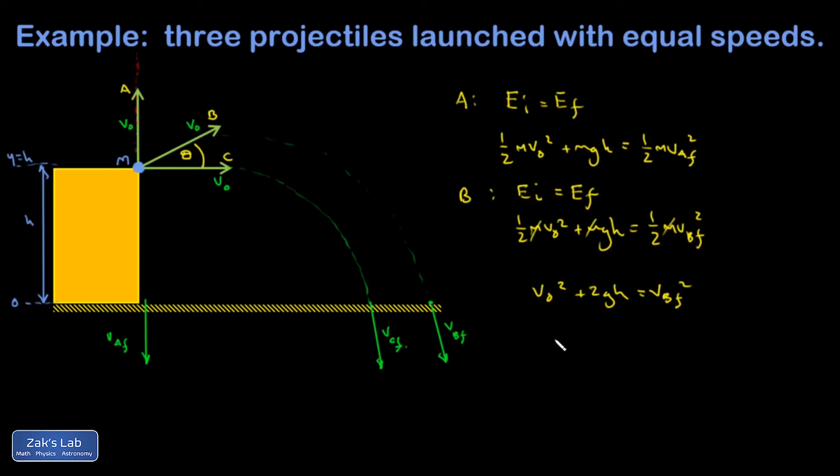And of course, VA final squared would look exactly the same. Let's solve for VB final. And I get V naught squared plus 2GH. So all three of these projectiles have exactly this same expression for their impact speed.